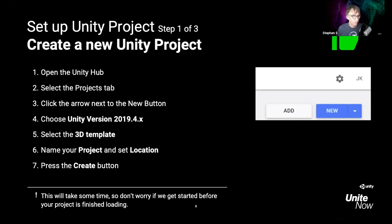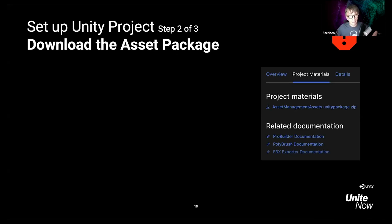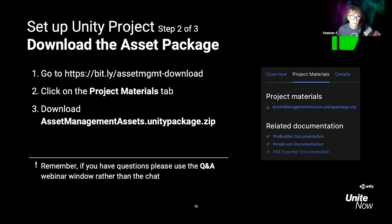While Unity is opening in the background, let's move to the next slide about downloading the materials. You should be choosing that Asset Management assets dot Unity package. Once Unity opens we can move on to importing. The materials are posted in the chat for those who came in late, and you can also go to the project page — which also links to the Pro Builder, Poly Brush, and FBX Exporter documentation.